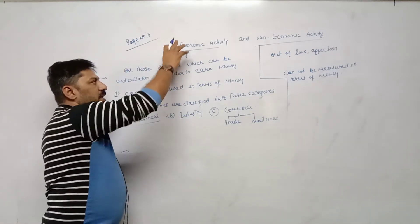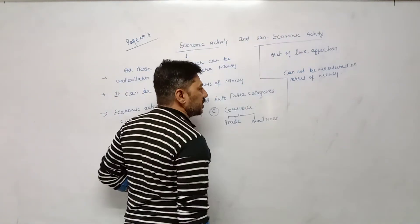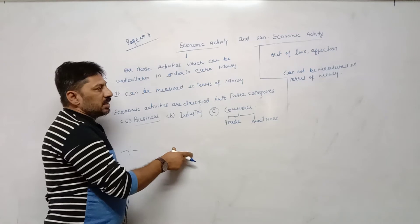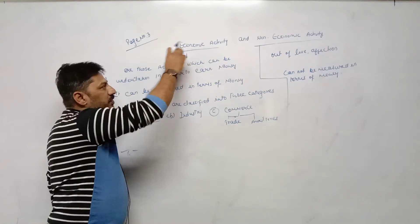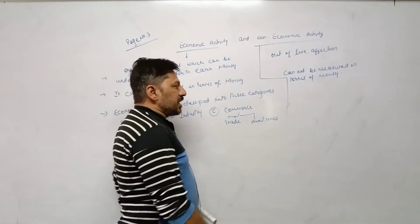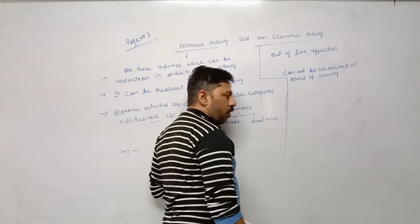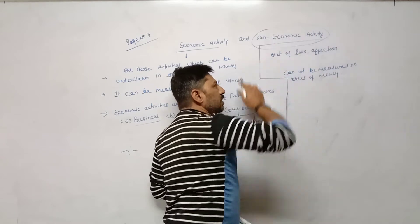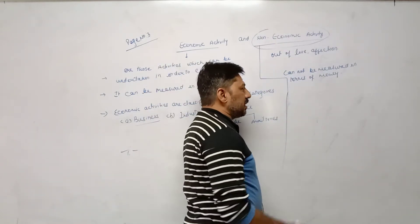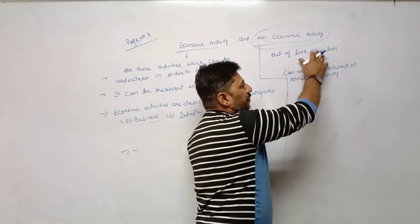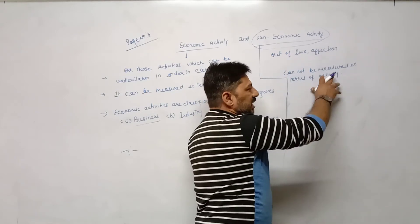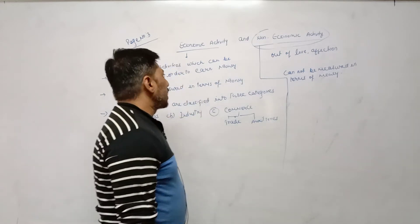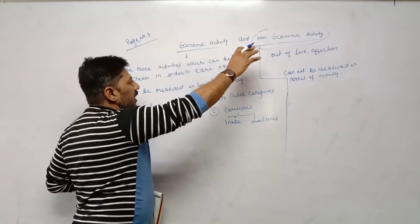For example: if a teacher is teaching in school and earning income from that, it is called economic activity. But if the same teacher is teaching his own son, daughter, or wards at home, that activity is considered non-economic because he is providing services out of love or affection towards his children, and such activities cannot be measured in terms of money. That's why it is called a non-economic activity. The topic of economic and non-economic activities is now completed.